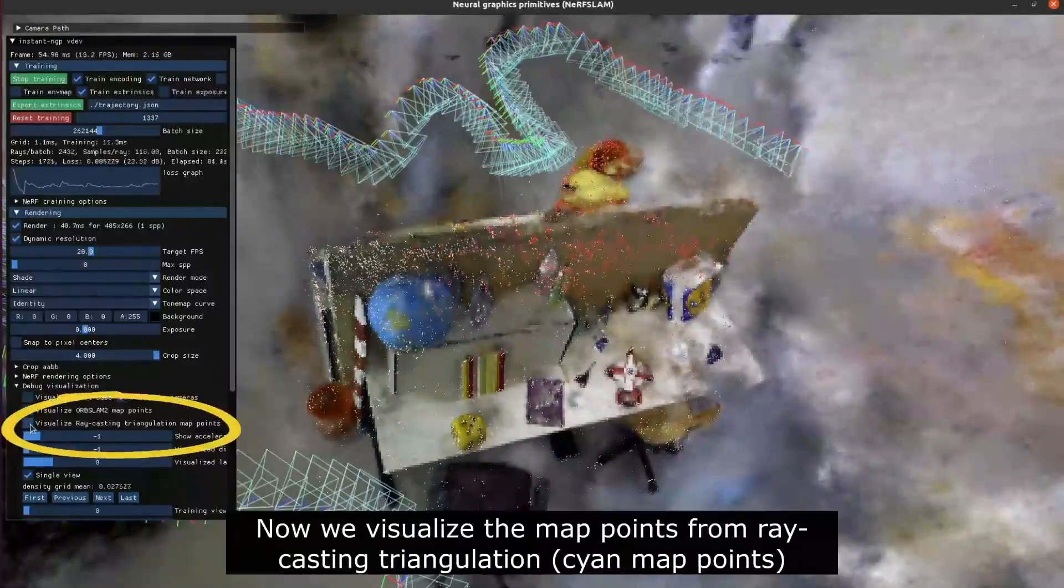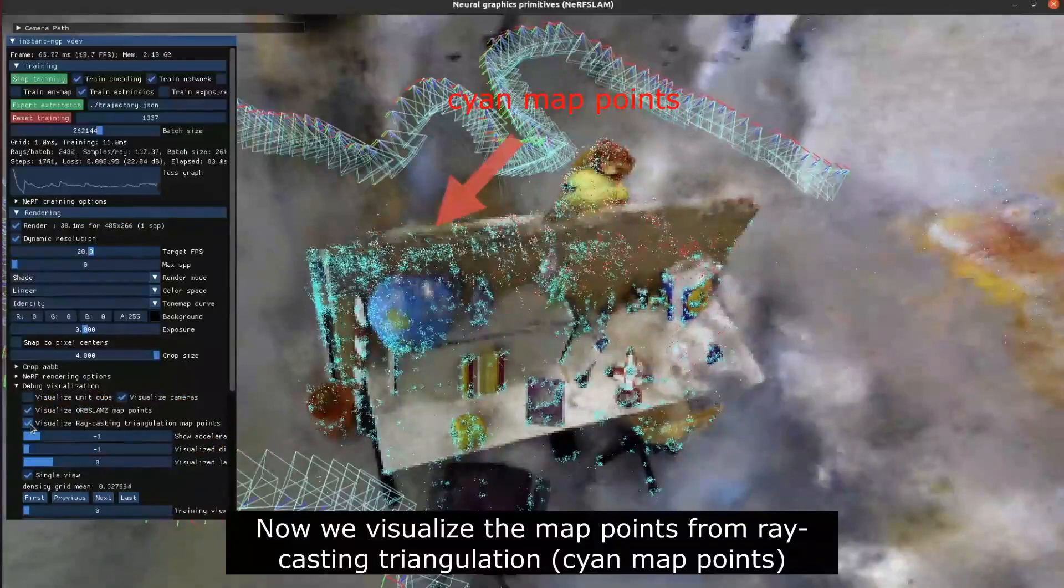Now we visualize the map points from ray casting triangulation, the cyan map points you see on the scene.